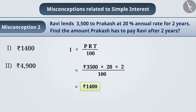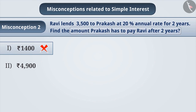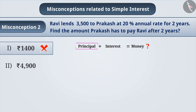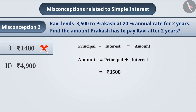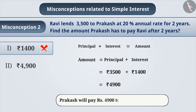Sometimes, students do not focus on what is asked in the question. They just find simple interest and give incorrect answers, choosing option 1. Here, we have to find the total amount Prakash has to pay Ravi. To calculate this, we have to find the sum of principal and interest. Since Amount = Principal + Interest, we get 3500 + 1400 = Rs. 4900. Therefore, the correct answer is option 2: Prakash will pay Rs. 4900 to Ravi after 2 years.